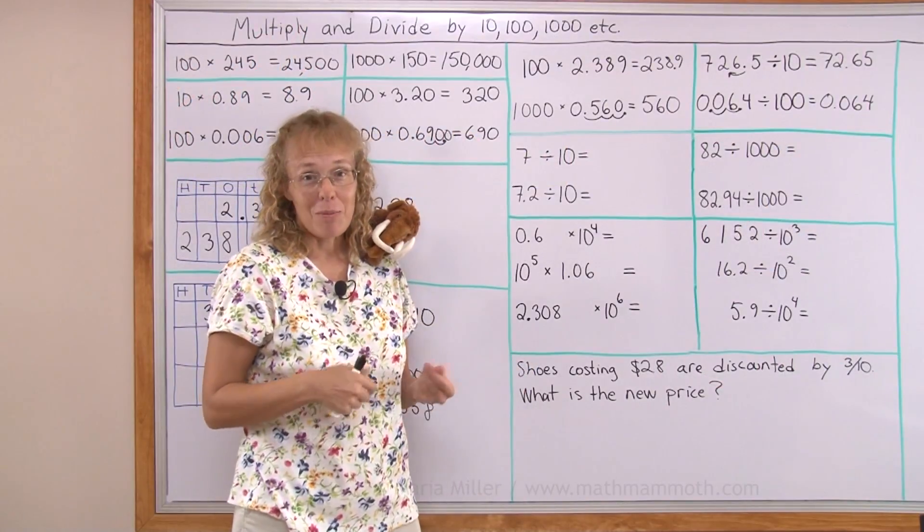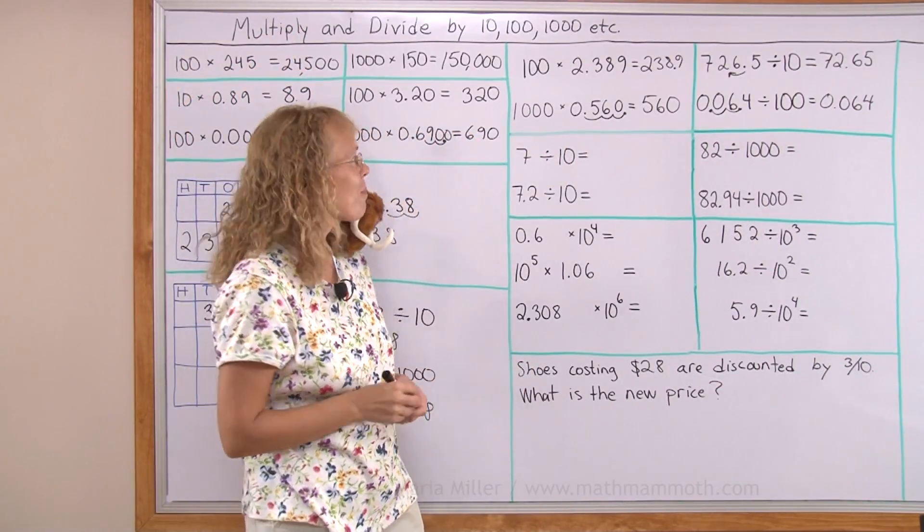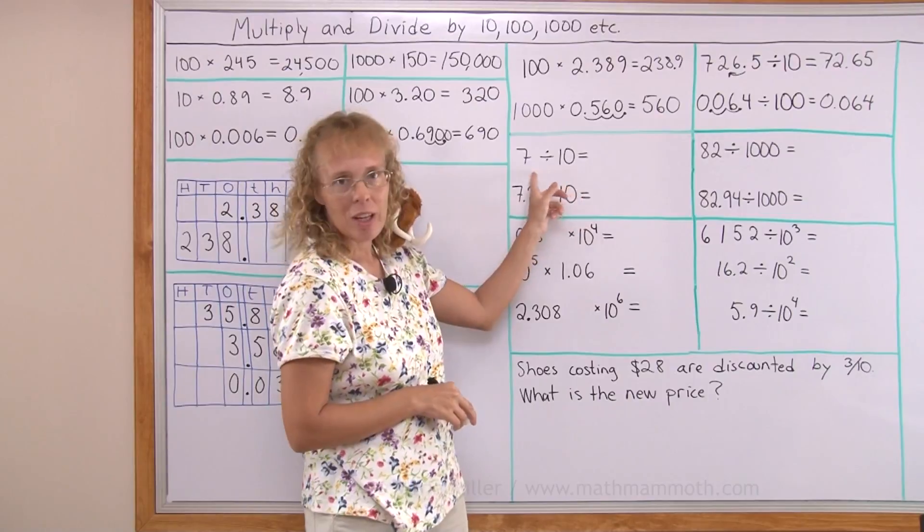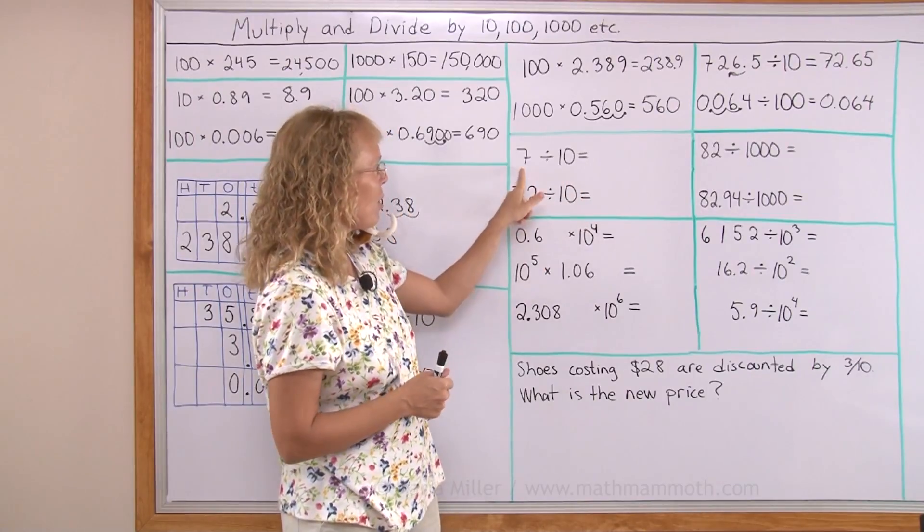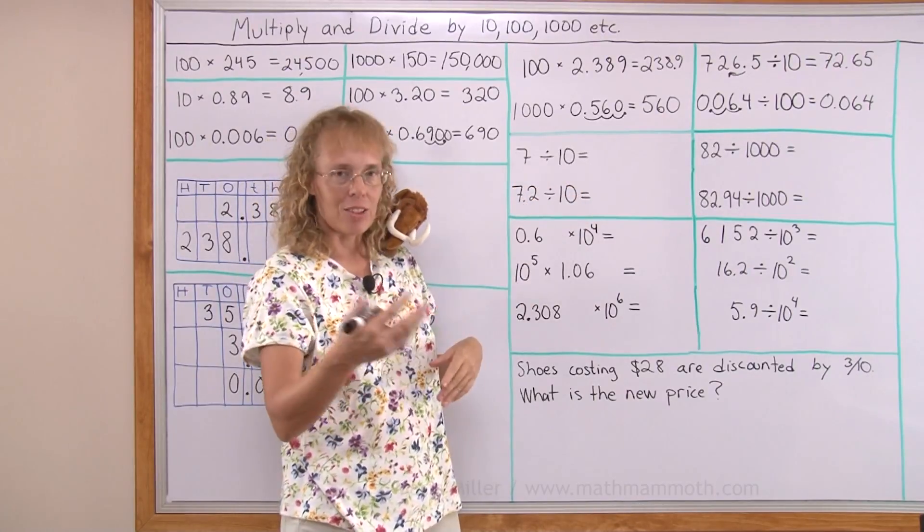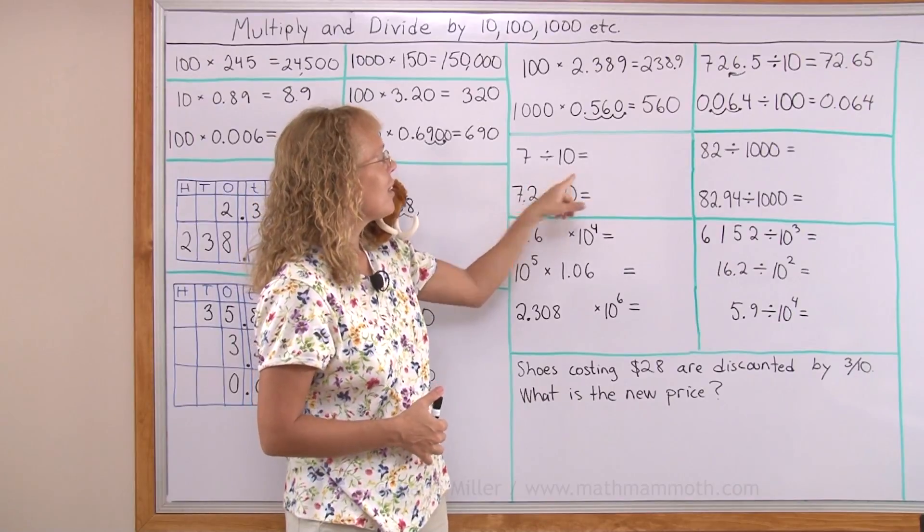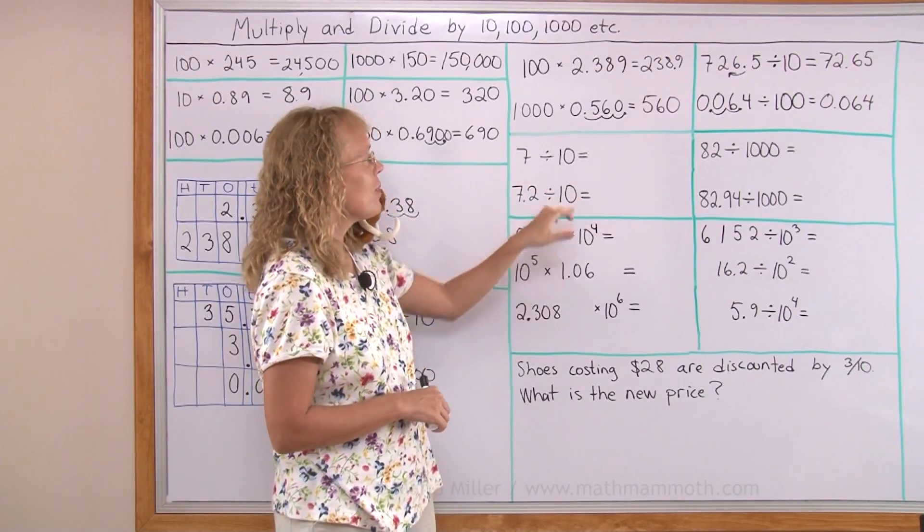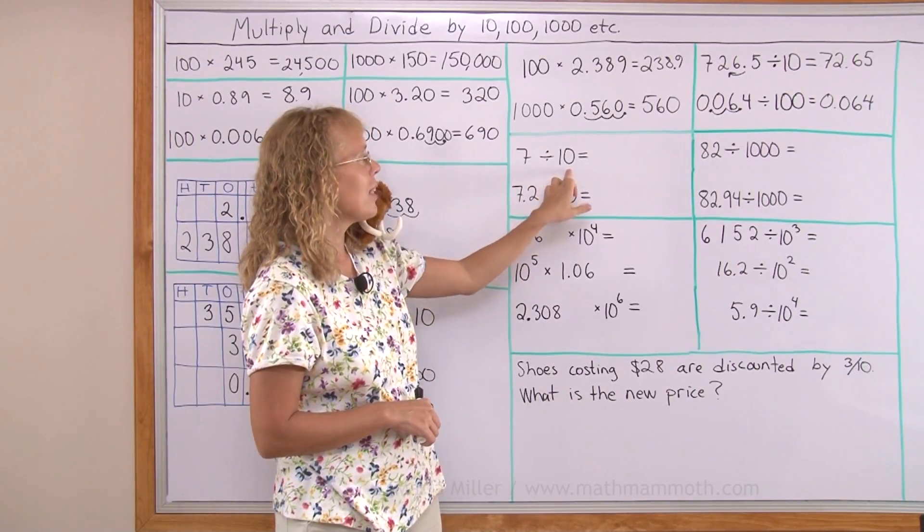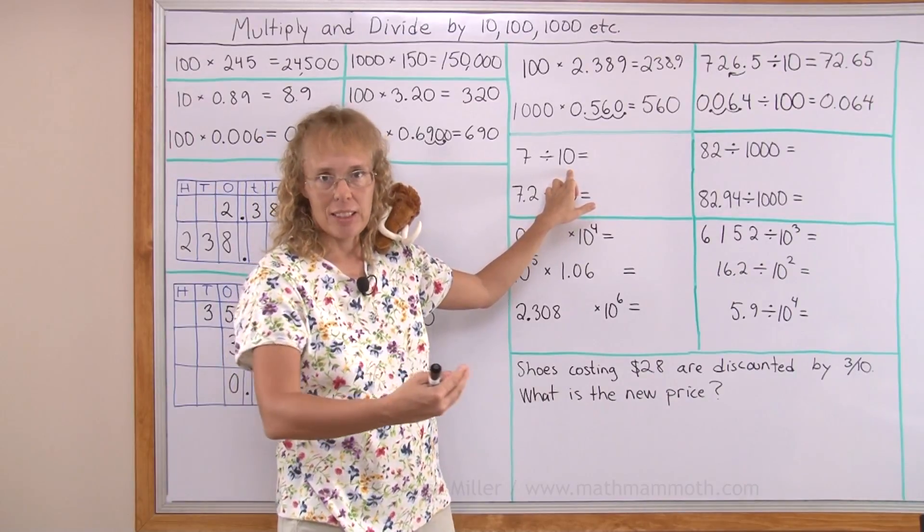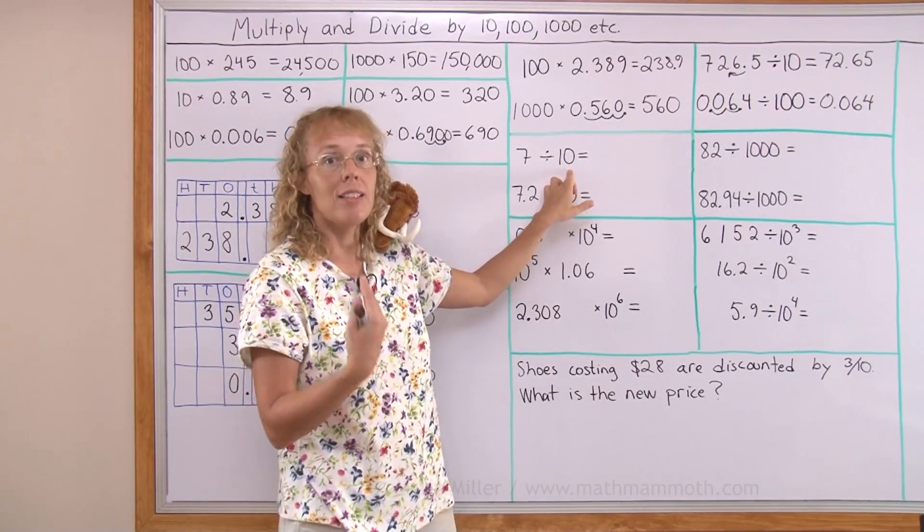Now I want to explain to you one more little neat connection. When we have whole number division, a whole number divided by 10 or 100 or 1000 or whatever, then you can basically just think of when you divide a whole number by 10, your answer has to have tenths. Your answer has to have one decimal digit.